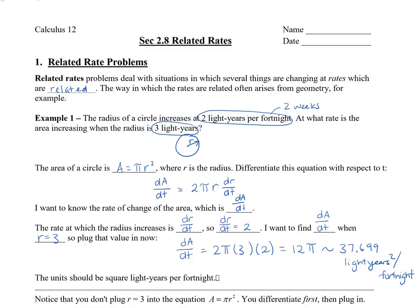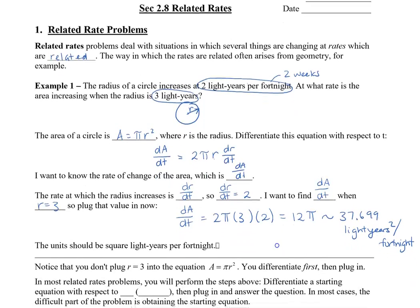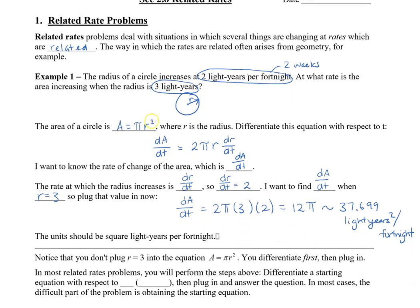Notice that you don't plug R equals 3 right into the equation at the beginning. We knew that R was 3, but if we had put it in at the start, we would just have an area — it wouldn't be the rate of the area changing. So you need to differentiate first, and then plug in the numbers.